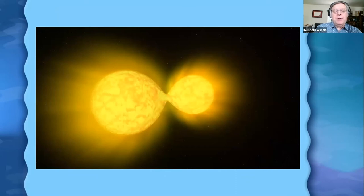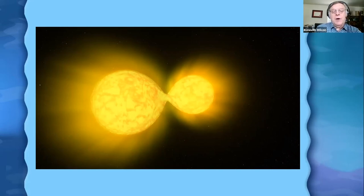Stepping beyond the solar system, we find tides affect stars. Many stars in the universe come in pairs called binary stars. Often you find two binary stars so close together that tidal forces cause their surfaces to bulge out to the point where they touch one another. These are called contact binaries, and they can change the evolution of the individual stars by changing the gas content — and sometimes this can lead to things like supernovas.